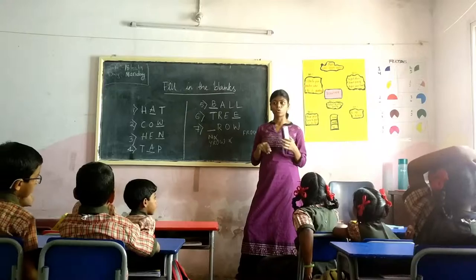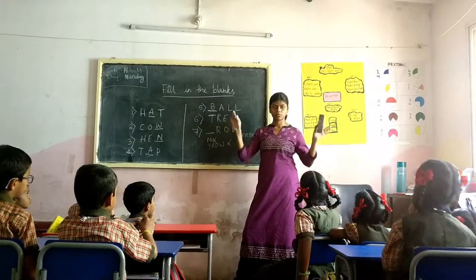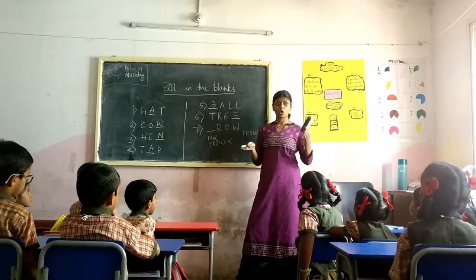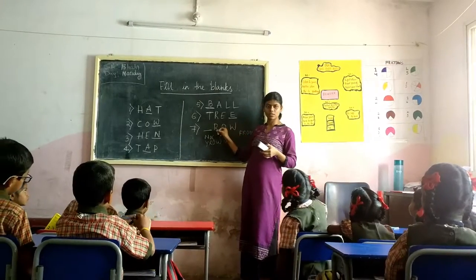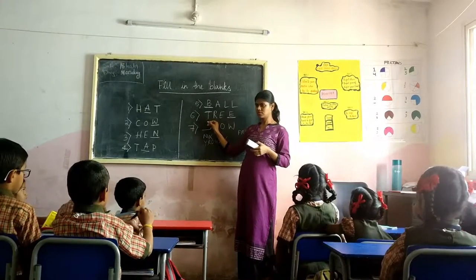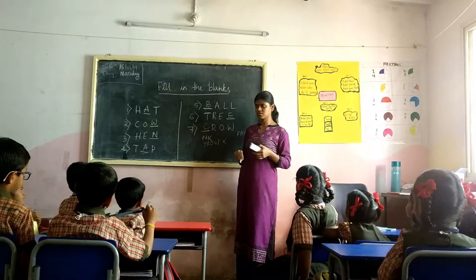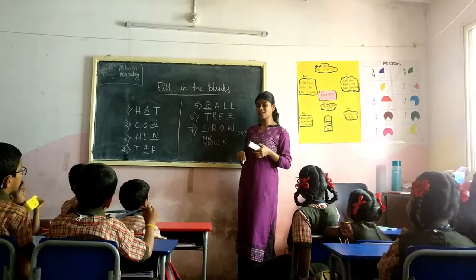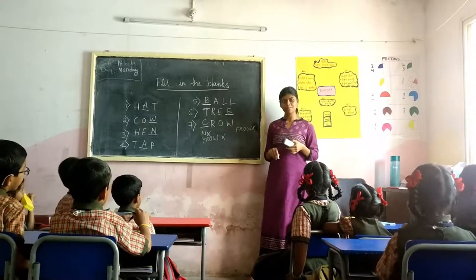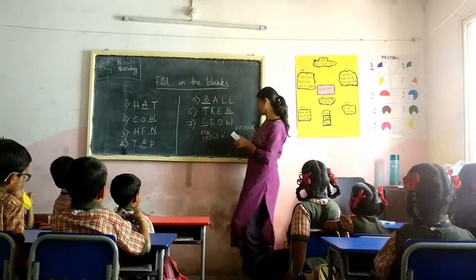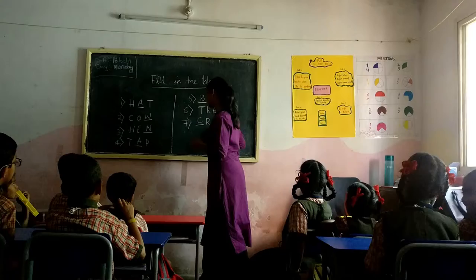What are the birds do you know? What birds fly? Crow. What is this? Can I write C here? Yes. Is it correct? No. What is the spelling of crow? So it's correct. C-R-O-W. Crow is correct.